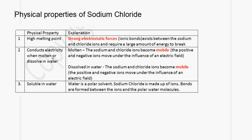Sodium chloride conducts electricity when molten or dissolved in water. When it is molten, the sodium and chloride ions become mobile — the positive and negative ions move under the influence of an electric field. If we use solid sodium chloride in a circuit, we will not get a current to flow. If we heat the sodium chloride until it melts, we get an electric current because the ions become mobile. If we dissolve the sodium chloride in water, the ions also become mobile and move under the influence of an electric field.